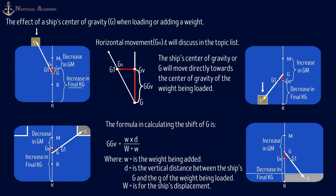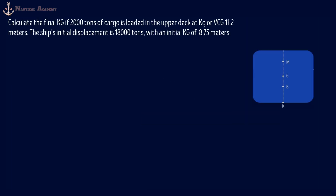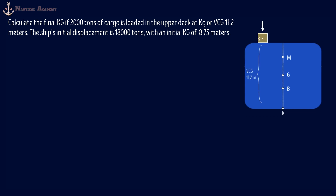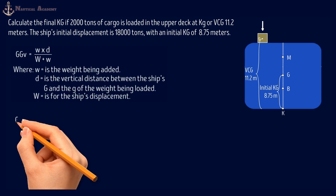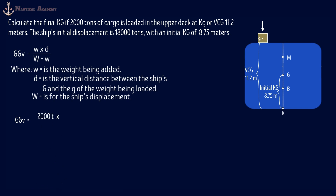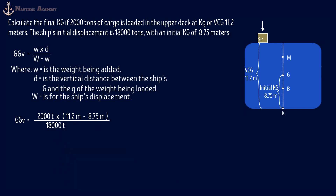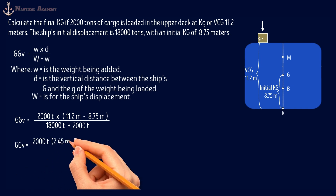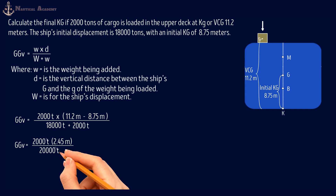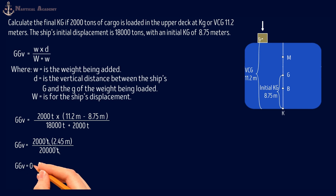Exercise: Calculate the final KG if 2,000 tons of cargo is loaded on the upper deck at KG or VCG of 11.2 meters. The ship's initial displacement is 18,000 tons with an initial KG of 8.75 meters. GGv = 2,000 tons × (11.2 − 8.75) meters, divided by (18,000 + 2,000) tons. That gives 2,000 × 2.45 ÷ 20,000. The vertical shift of G is 0.245 meters.